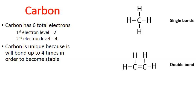You notice how there are two carbons. Look at the carbon on the left. There are four dashes attached to the carbon on the left. There's also four dashes attached to the carbon on the right. So these carbons are stable.